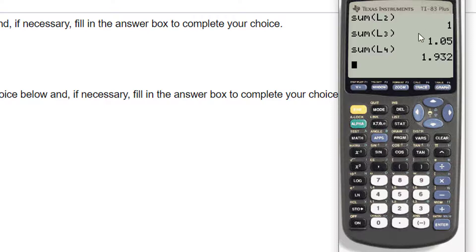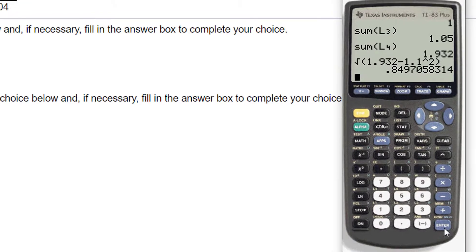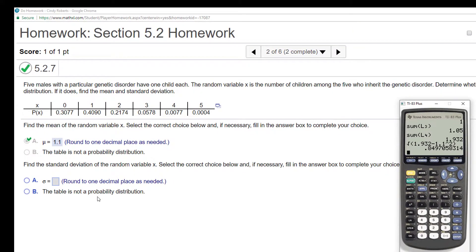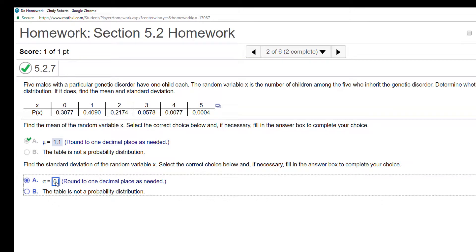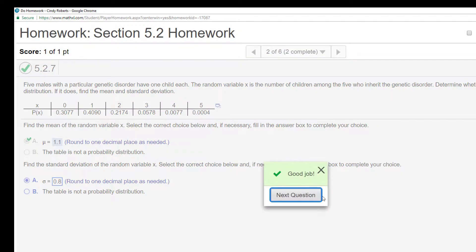Now what I need to do is I need to take this sum minus my mean that I found squared and square root it. So I'm going to do my second square root. I'm going to take the sum that I just found 1.932. I am going to subtract my mean, which is 1.1, and I'm going to square it. And that finishes off my formula. And so this one round to one decimal looks like it would be 0.8. And I get my answer.